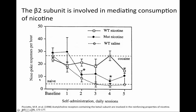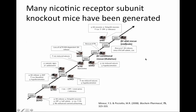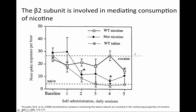Here is an example of data from the beta-2 subunit knockout mouse. These mice were previously trained to self-administer cocaine, and the cocaine self-administration level is represented by the dashed line. They nose poke into a port to receive cocaine. When the mice were then switched from cocaine to nicotine, the mutant mice lacking the beta-2 subunit, shown in the filled diamonds, consume less nicotine compared to their wild-type littermates in the open squares. These data show that the genetic deletion of the beta-2 subunit reduces nicotine-seeking behavior.